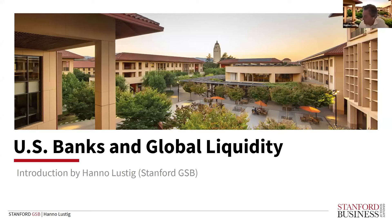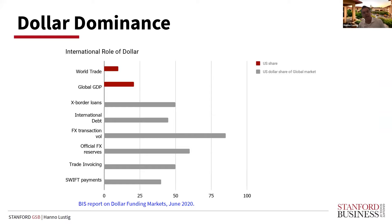I thought it'd be a good idea to set the stage for Wenjin's talk by talking a little bit about the role of the dollar in the U.S. and the international financial system. I wanted to start by showing you this picture from a recent report out of the BIS on dollar funding markets. What this picture shows is the international role of the dollar. The red bars show the role of the U.S. in terms of its fraction of world trade and global GDP.